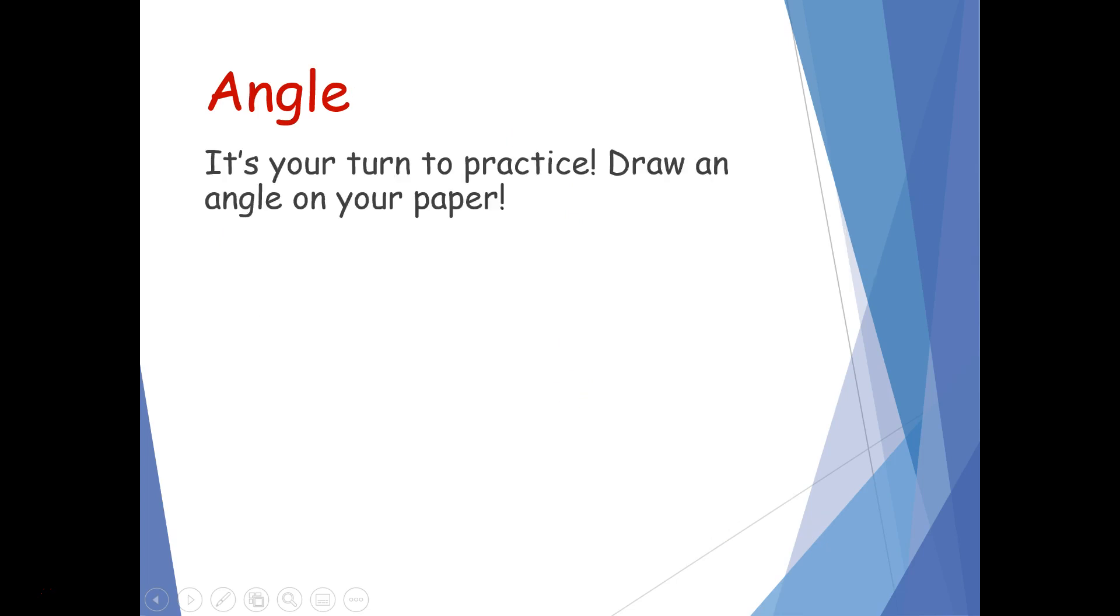All right. It's your turn to practice again. So I want you to get that same piece of paper and we're going to practice drawing angles. So we're going to start drawing a ray in any direction you want. Then we're going to draw another arrow. But we want to start that arrow on the same endpoint or vertex as that first ray we have.